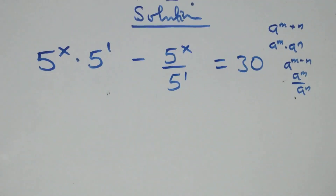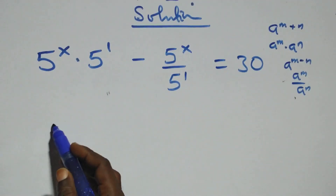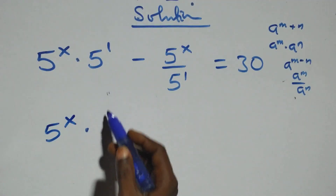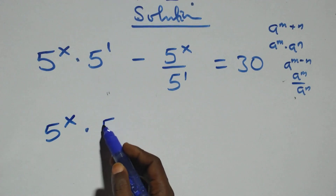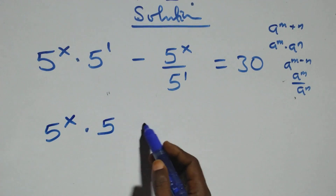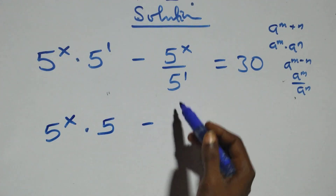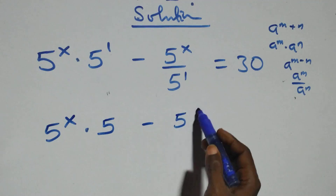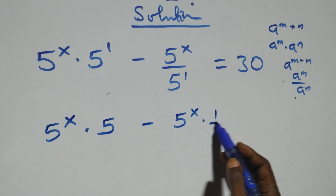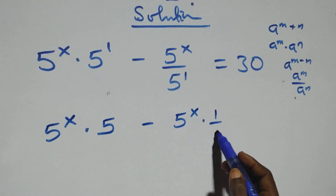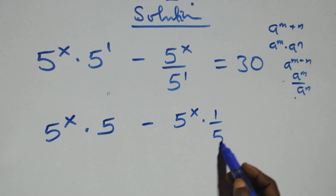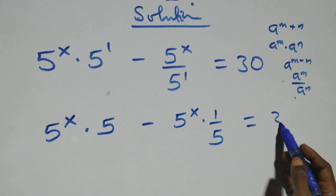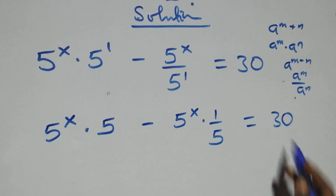So this becomes 5 raised to power x times 5 raised to power 1, that's the first part, minus 5 raised to power x times 1 over 5, and this equals to 30.